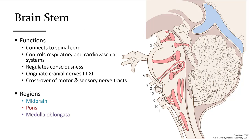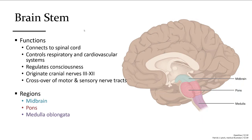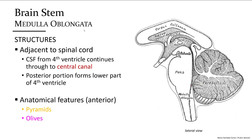All cranial nerves except those for vision and smell originate from the brainstem. Motor (efferent) neurons leaving the brain and sensory (afferent) neurons bringing sensations from the body cross over to the opposite side in the medulla oblongata — this is why the left side of the brain controls the right side of the body and vice versa. As the most inferior portion of the brain, the medulla oblongata is adjacent to the spinal cord, and the central canal of the spinal cord begins there.